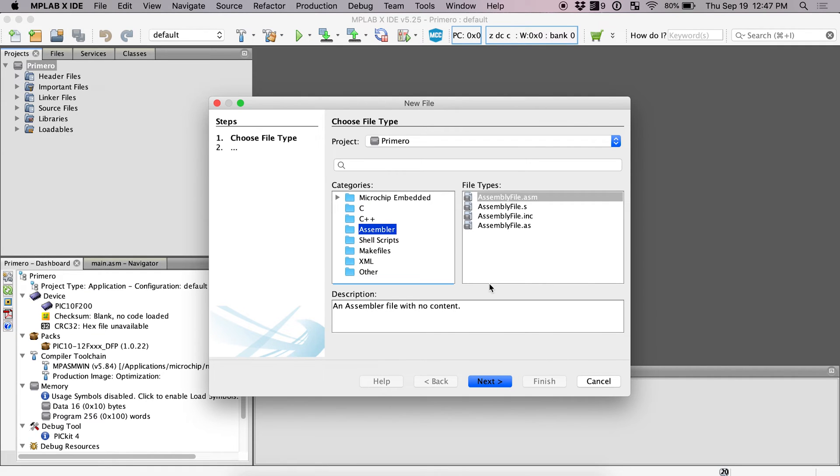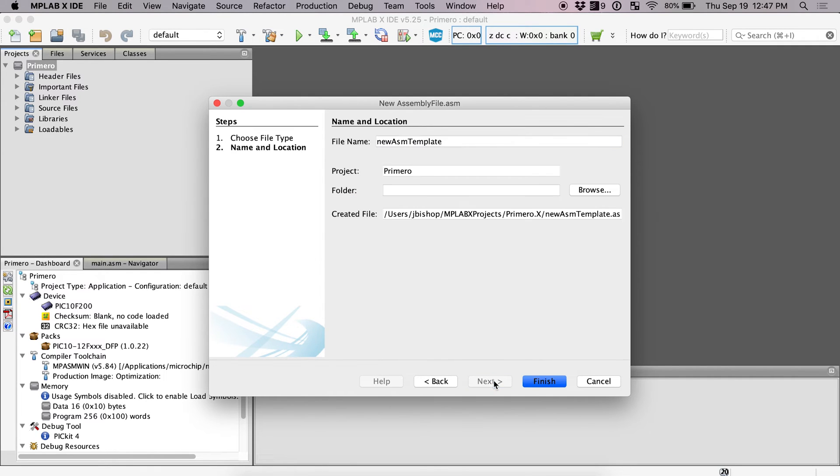We'll just do assembly file .ASM. Go on. But we don't want to call it new ASM template because that means nothing. So I'll do just main. And as you can see right here, it's main.ASM. ASM means assembly, just in case that wasn't obvious. And then we will go finish.